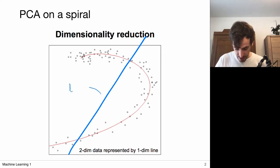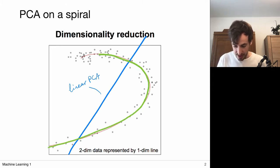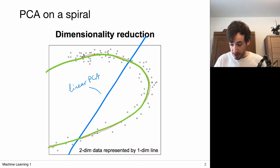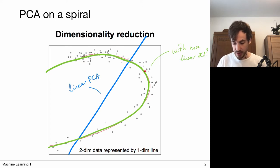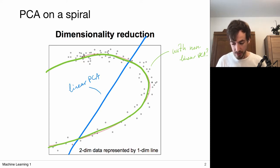Obviously this cannot be done with linear principal component analysis, because it just looks for the largest directional variation — maybe something like this — so you would have this linear model where each point is mapped onto a particular line and it's no longer really representative of the original data points. But ideally we want to recover this representation, and yes, there are indeed several approaches that would be able to recover this lower dimensional structure.